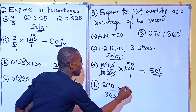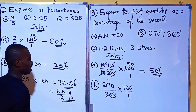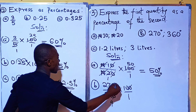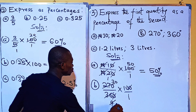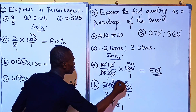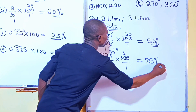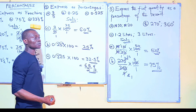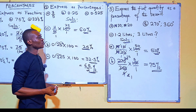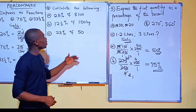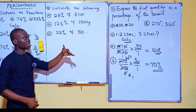Simplifying 270 over 360 times 100: 9 into 360 is 40 and 9 into 270 is 30; then 2 into 40 is 20 and we get 30 times 5 divided by 2 — working through gives us 75%. So 270 is 75% of 360. The third exercise is left as an exercise — leave your solution in the comment section.